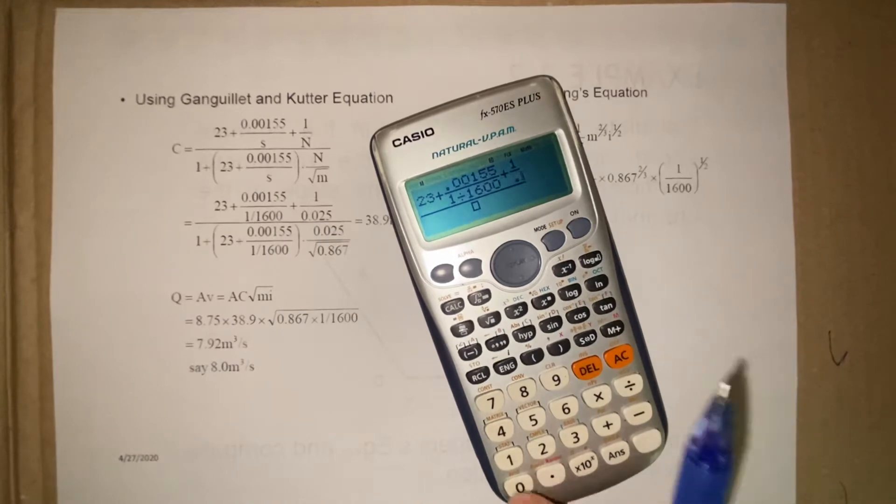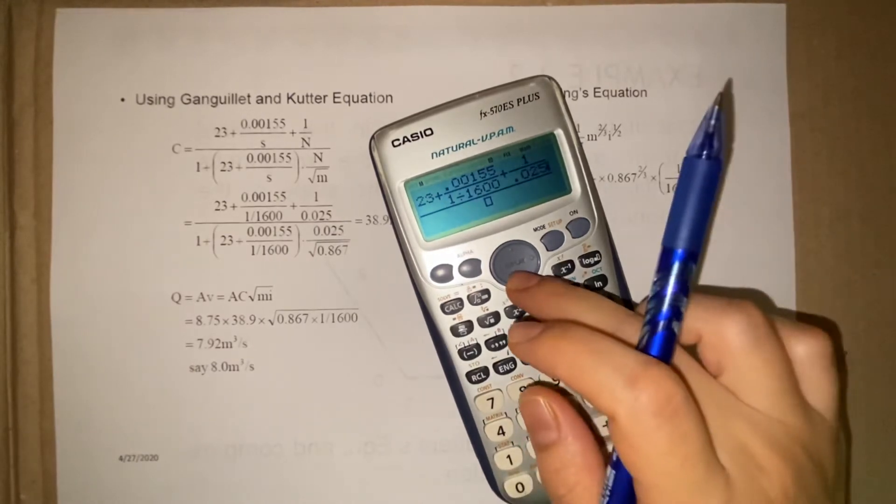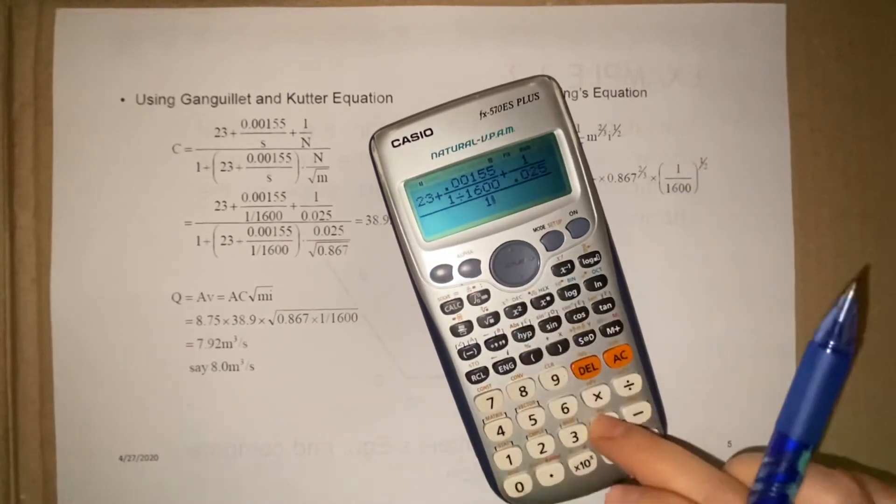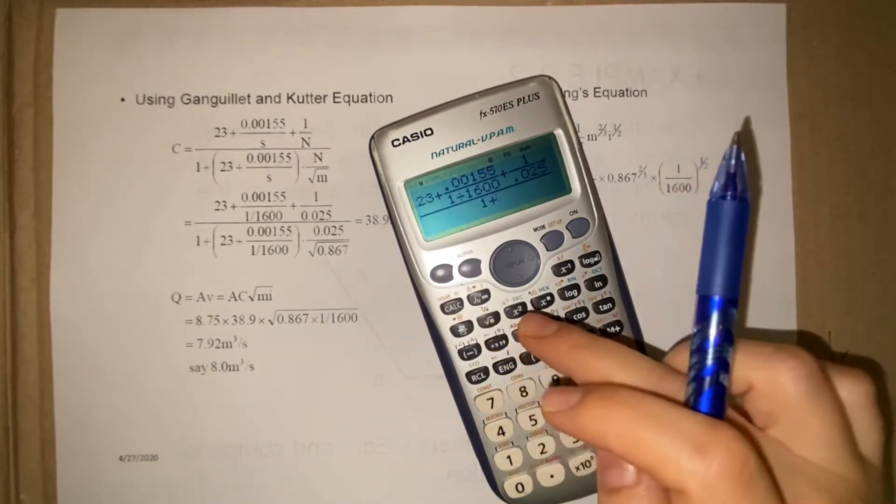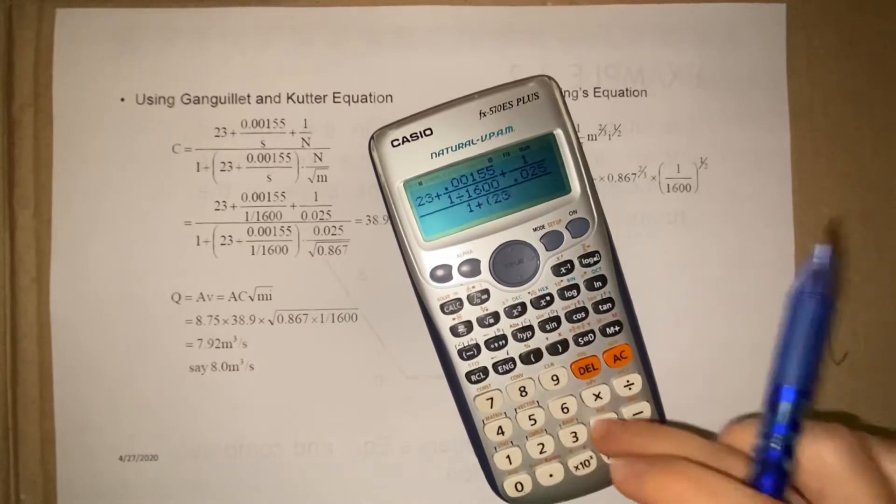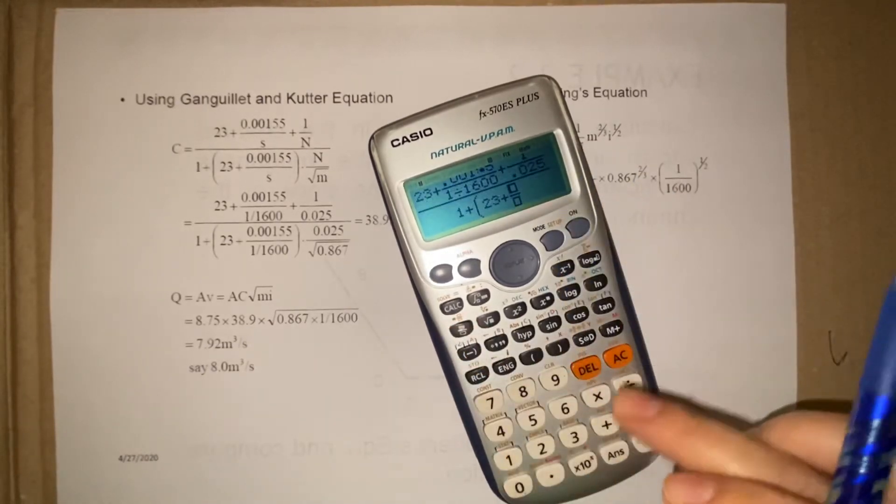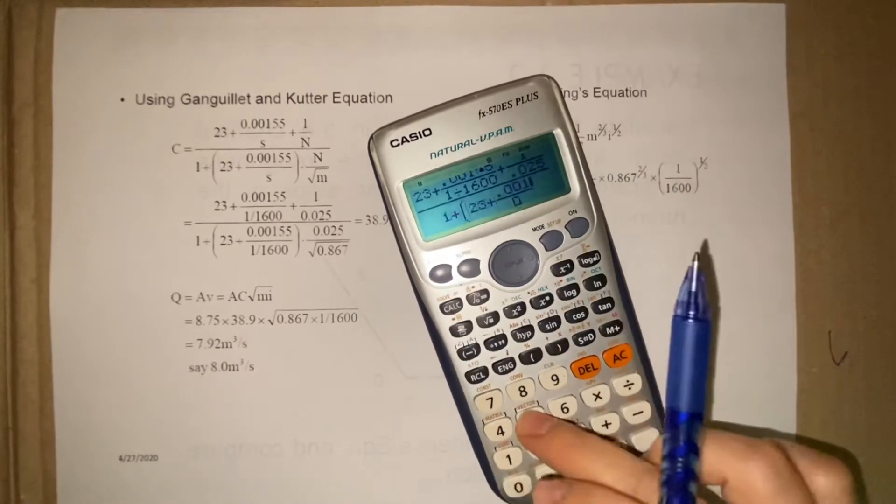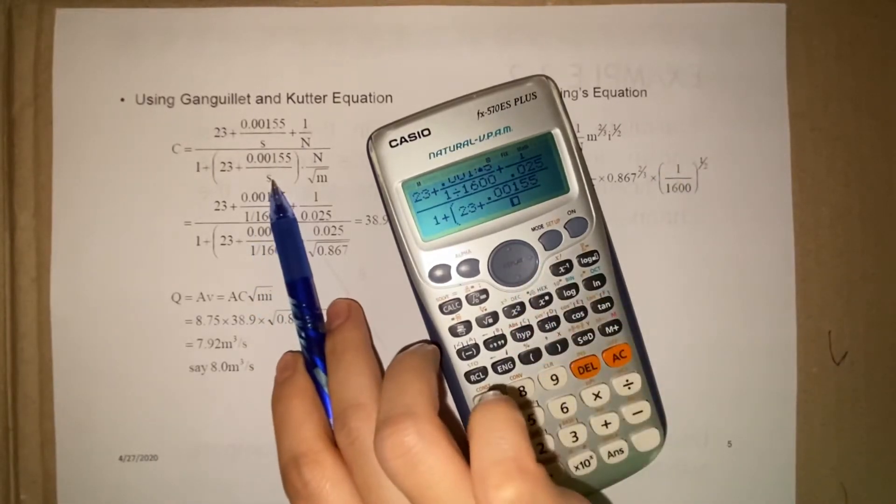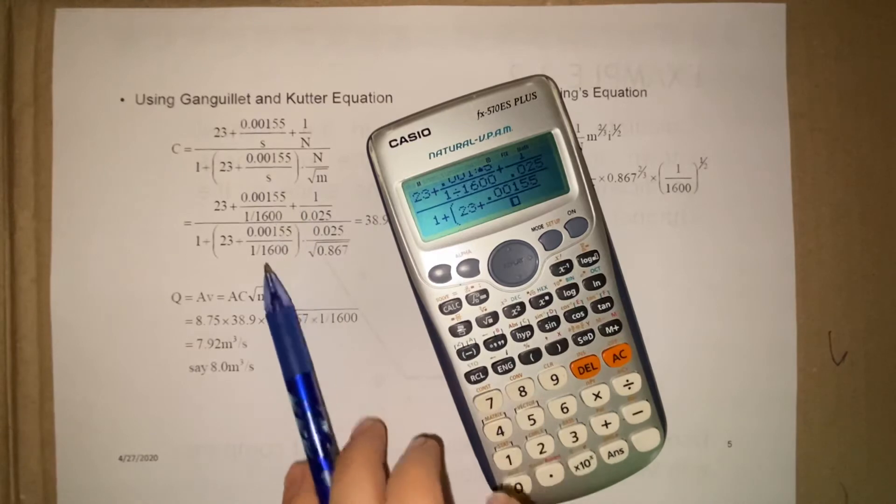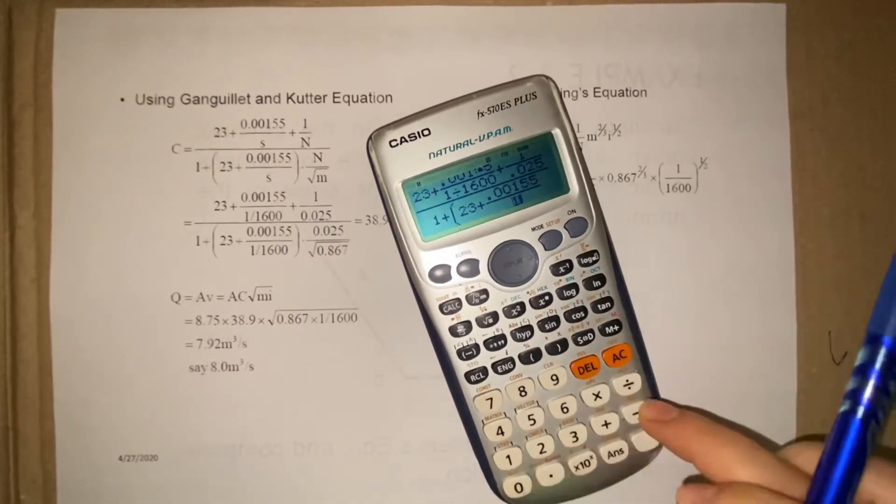Okay, then 1 plus, 23 plus 0.00155 over S, slope 1 over 1600.